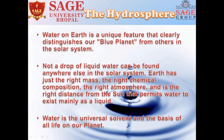Here are a few key points on hydrosphere. Water is the universal solvent and the basis of all life on our planet. Water on earth is a unique feature that clearly distinguishes our blue planet from others in the solar system. Not a drop of liquid water can be found anywhere else in the solar system. Earth has just the right mass, right chemical composition, the right atmosphere, and the right distance from the sun that permit water to exist mainly as a liquid.